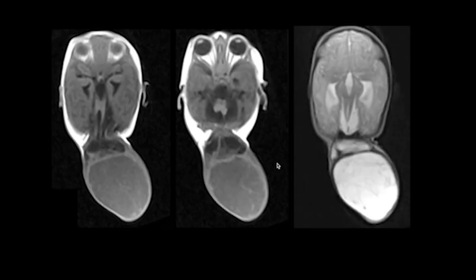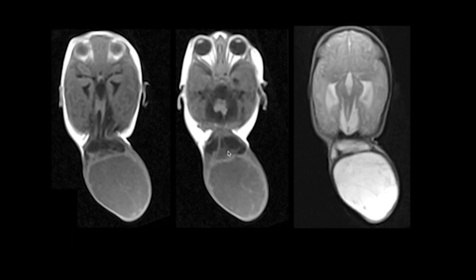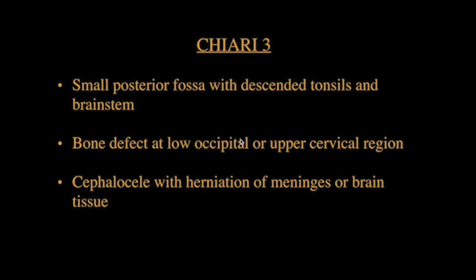This is another case where there is a bony defect in the occipital region with herniation of meninges and brain tissue, forming a large encephalocele — diagnosed as Chiari 3 malformation. Chiari 3 will have Chiari 2 features plus a bony defect in the lower occipital region forming a cephalocele with herniation of meninges or brain tissue.